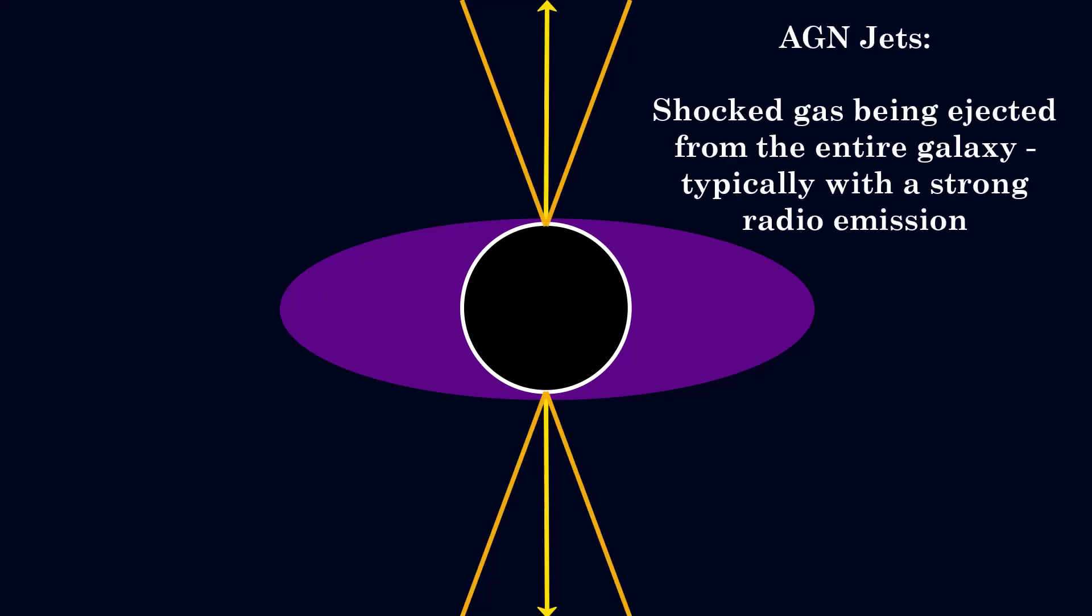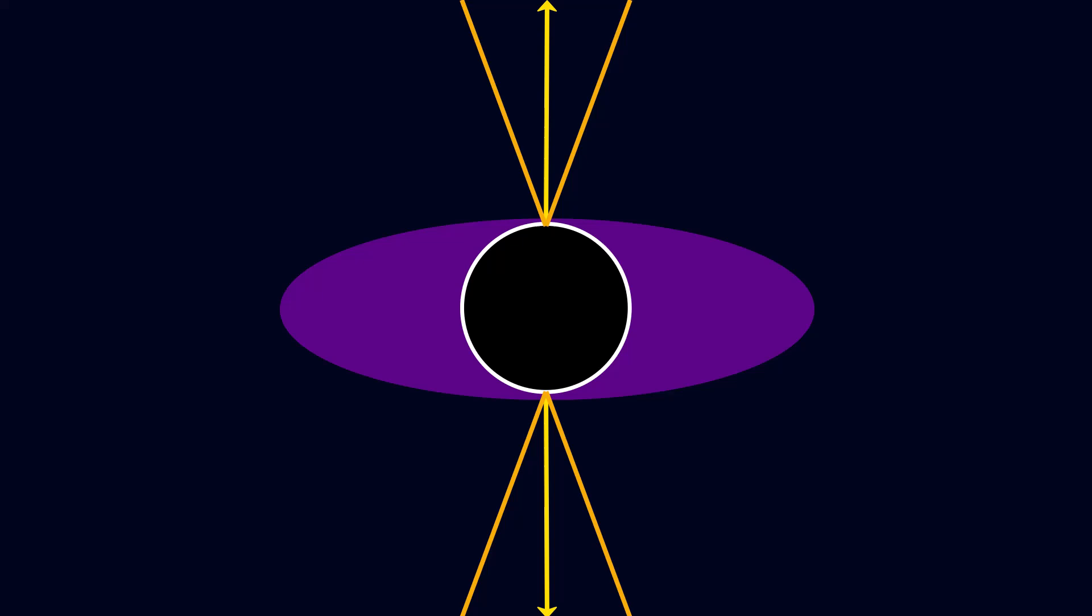The black hole may also be emitting collimated outflows of shocked gas from its poles. Shocked here means that the emitted gas is moving at extremely high, almost relativistic velocities. These are referred to as the AGN jets.